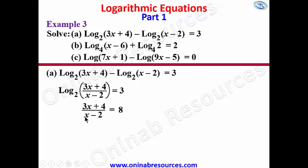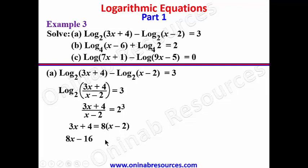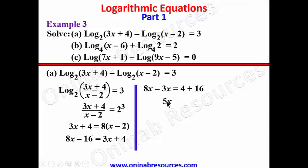Cross multiplying, we have 3x plus 4 equals 8 times (x minus 2). Expanding and rearranging: 8x minus 16 equals 3x plus 4. Collecting like terms: 8x minus 3x equals 4 plus 16, so 5x equals 20. Dividing both sides by 5, x equals 4. We are done with example 3a.